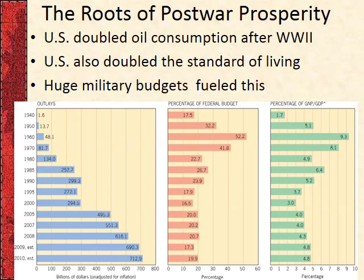A huge component of this post-war prosperity was the increase in military spending. During the Eisenhower administration we'll talk about the military-industrial complex, but the federal government starts spending tons of money, primarily on military items. In 1950 outlays were 13.7 billion dollars, whereas in 2010 we're estimated at about 713 billion.